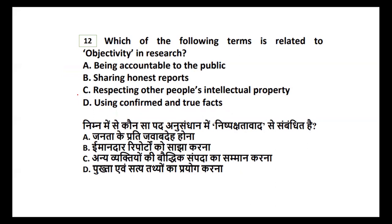Question twelve: which term is related to objectivity in research — being accountable to the public, sharing honest reports, respecting others' intellectual property, or using confirmed and true facts? Objectivity is one of the characteristics of research. Objectivity means using confirmed and true facts. Whenever you use anything in research, it should be factual and confirmed.